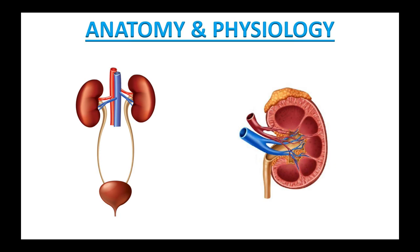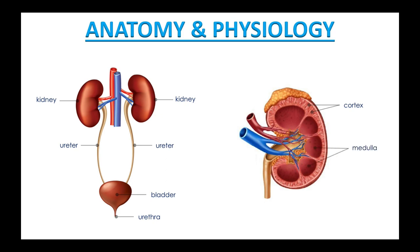Before we start, I'd like to go over the basic anatomy and physiology of the urinary system. The urinary system consists of two kidneys, two ureters, one urinary bladder, and one urethra. Each kidney is divided into the cortex and the medulla. Inside the cortex of both kidneys are thousands of microscopic filtering units called nephrons. It's important to drink lots of water in order for the kidneys and the urinary system to function properly.